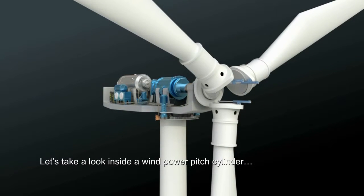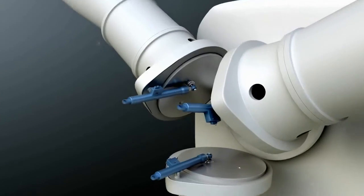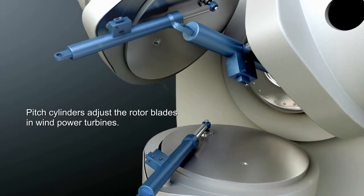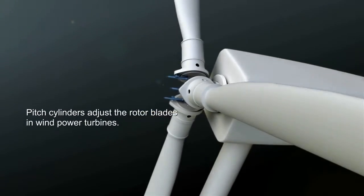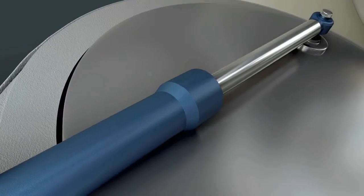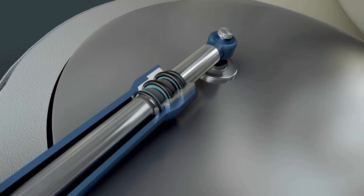Let's have a look at the pitch cylinder in more detail. The function of the pitch cylinder is to adjust the rotor blades of a wind turbine. It works constantly, moving the turbine's blade to maximize energy production from the wind.